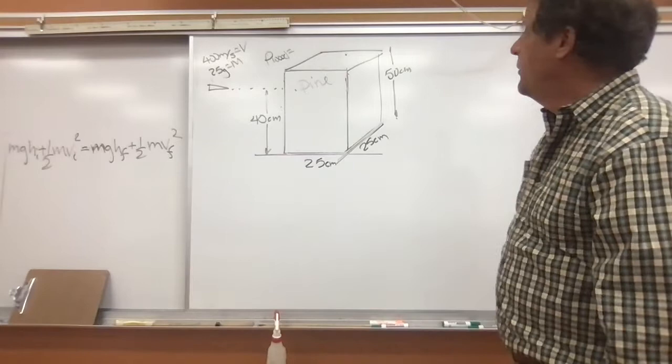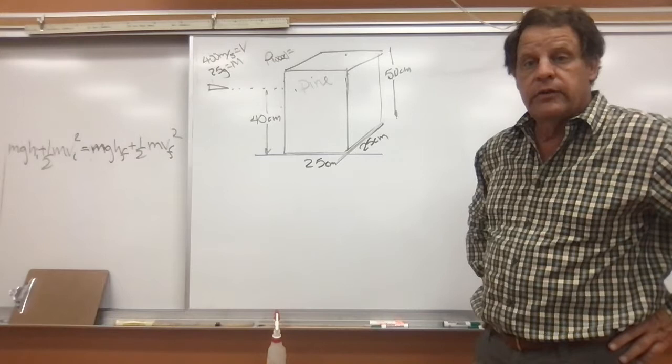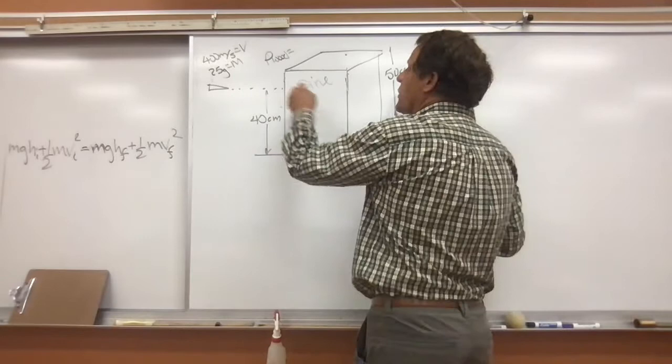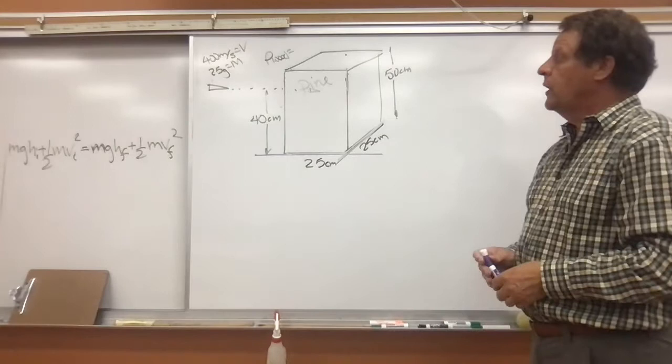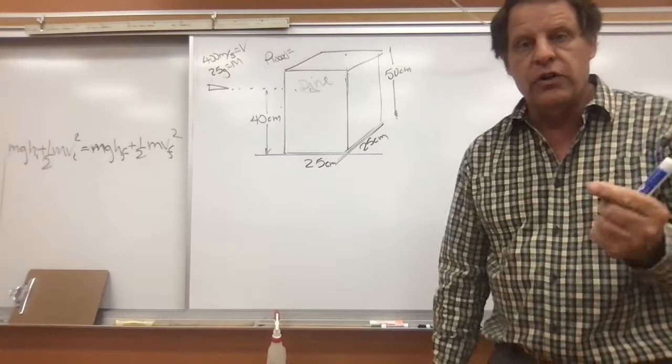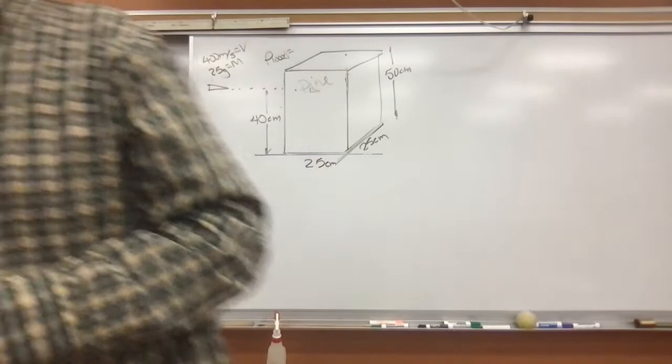We're going to have a bullet hit something — like you might have imagined or seen in a movie. Does it topple over or does it just stick? We're going to assume the bullet goes in and sticks. So the question is: does that bullet impart enough energy to cause the block to rotate to a point where it topples over?